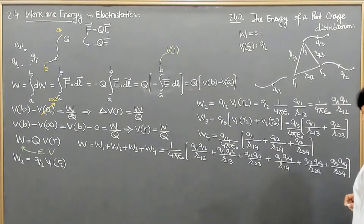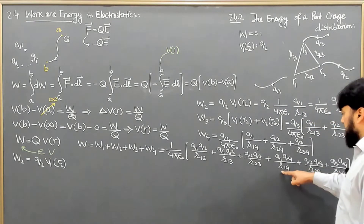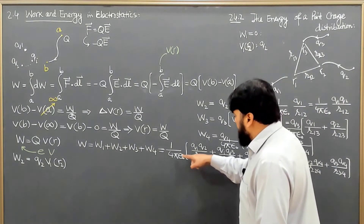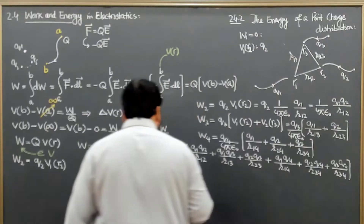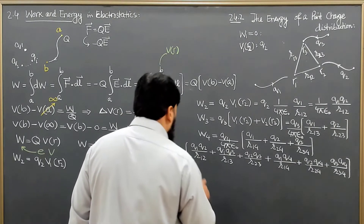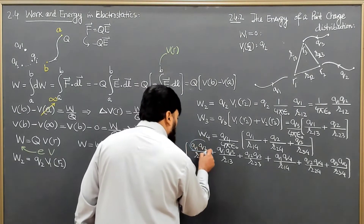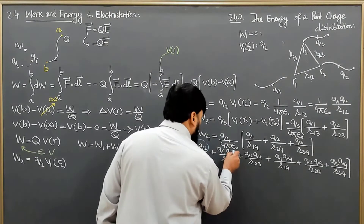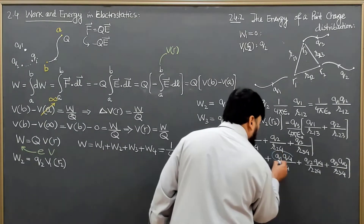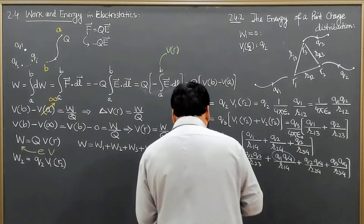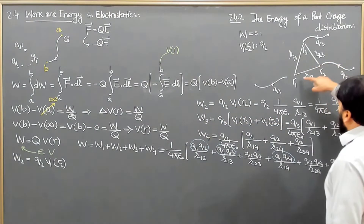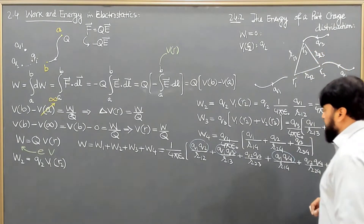We have the total number of terms here: 3 terms for W4, 2 terms for W3, 1 term for W2, and 0 terms for W1. Looking at the symmetry, we have Q1 Q2, then Q1 Q3, Q1 Q4 — this is the interaction of Q1 with all the rest of the charges: Q1 with 2, 3, and 4.